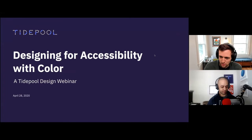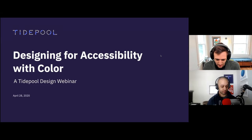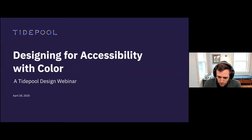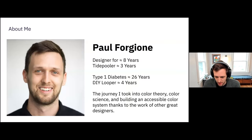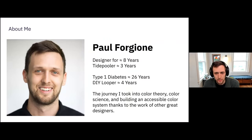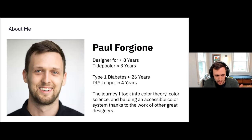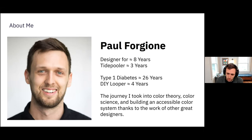So you all can see my screen — we're good to go. My name is Paul Forgeone. I have been a designer for about eight years and a Tidepooler for three years. I have had type 1 diabetes since I was four years old, and I'm about to hit my 30th birthday, so almost 26 years with type 1 diabetes.